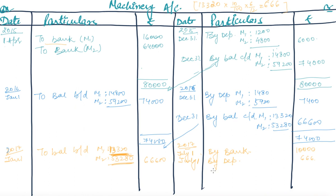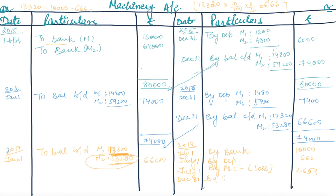Since there is a loss, we debit the loss to the Profit and Loss account. On the credit side of the machinery account, we write: By P&L Account (Loss) for the amount of loss = 13,320 − 666 − 10,000 = rupees 2,654. This loss on sale of M1 is posted to the P&L account on 1st July 2017.